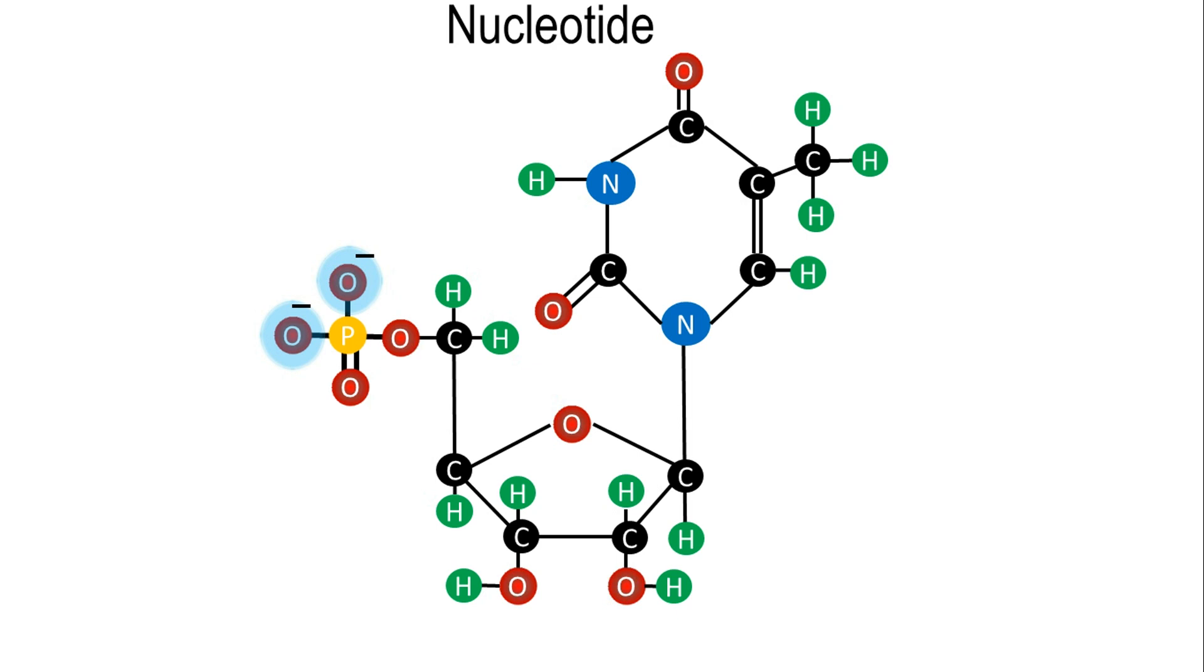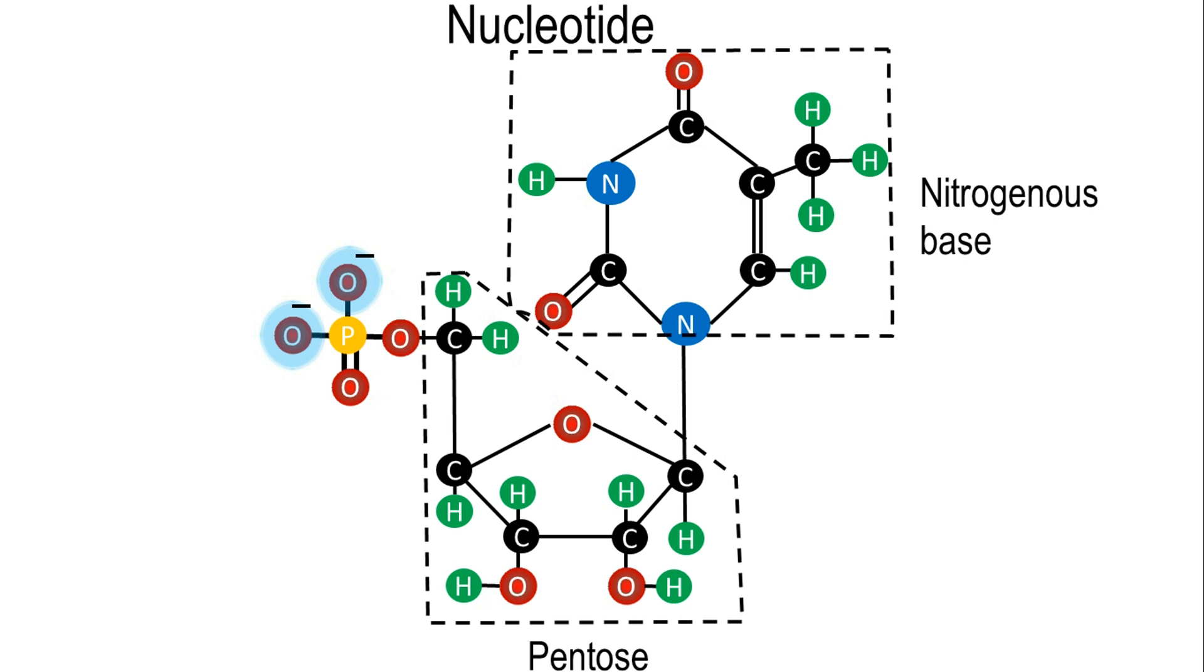There are three main components of a nucleotide: a 5-carbon sugar called a pentose, a cyclic structure with rings made of carbon and nitrogen atoms called a nitrogenous base, and a phosphate group.